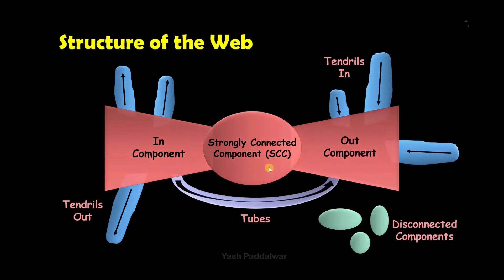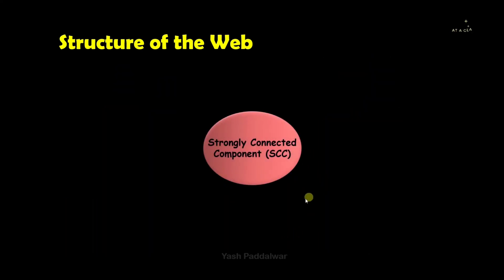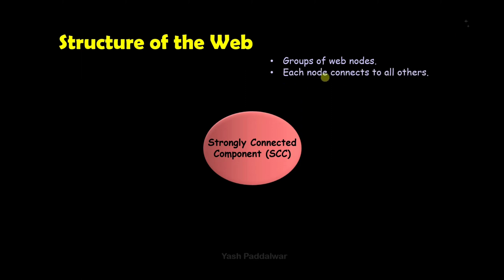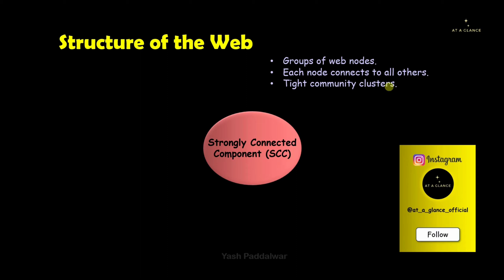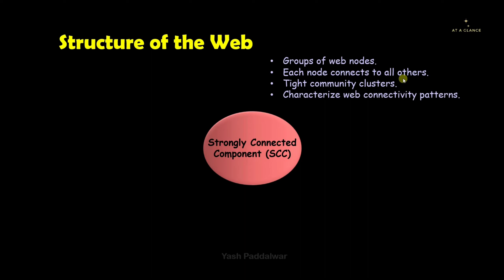Let's look at each component starting with the strongly connected component, termed SCC. The SCC is a group of web nodes — that is, web pages — which are strongly interconnected with each other. Each web page connects to every single other web page, which is why it is called the strongly connected component. Since the interconnection is strong, they form tight community clusters. The SCC characterizes the web connectivity patterns and is useful in network analysis.